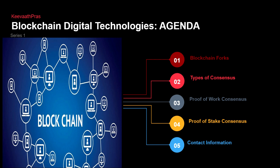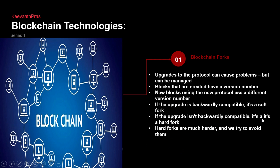In today's lecture, what we'll be seeing is: what is a blockchain fork, and all the different kinds of consensus — this will be a series of lectures. What is proof of work, which we already saw. What is proof of stake, which is coming up. Like every software code that goes through development and upgrades, upgrades are made to protocols and they can be managed. Everything has a version number, and this is what is called a fork. New blocks created using the new protocol will use a different version number.